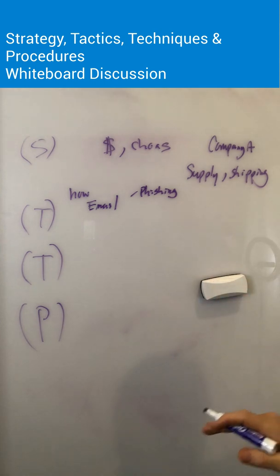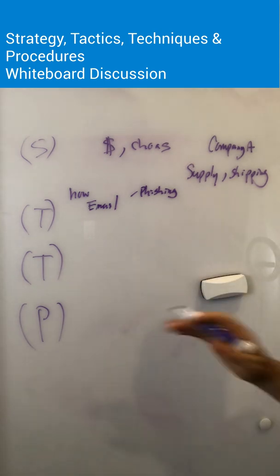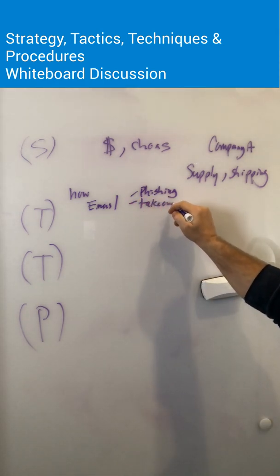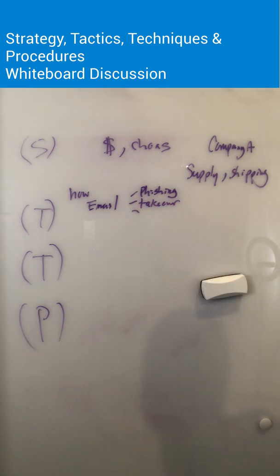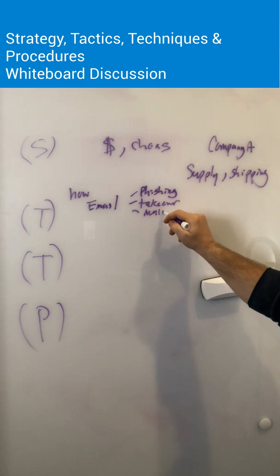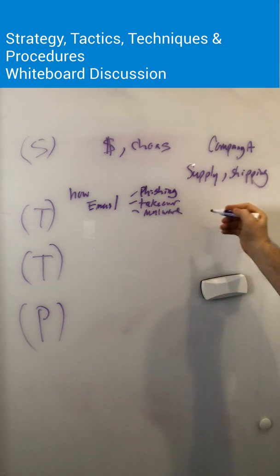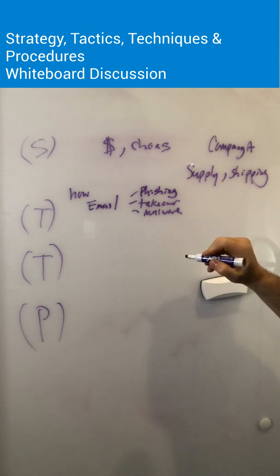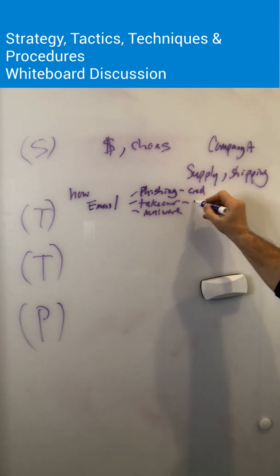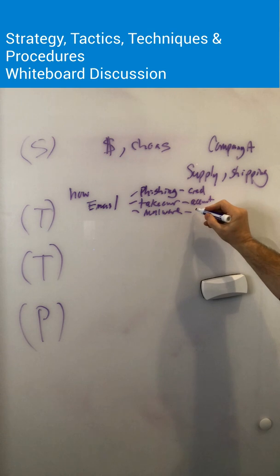They might have a tactic of phishing to get credentials, account takeover tactics in play, and then get entrenched and install malware. So three tactics: phishing just to get credentials, account takeover to take control of accounts, and then getting malware onto systems by coming in through known services.